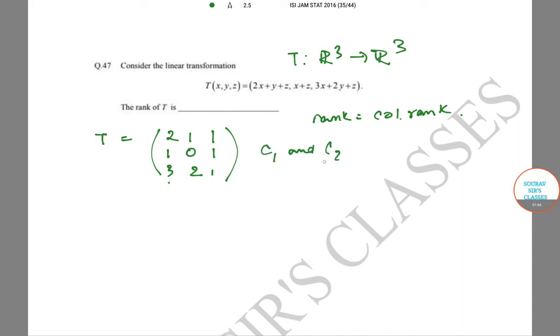Hence, c₁ and c₂ (this is c₁, this is c₂, this is c₃) - c₁ and c₂ are independent. Suppose a times c₂ plus b times c₃ is equal to c₁. So a times [1,0,2] plus b times [1,1,1] is equal to [2,1,3].